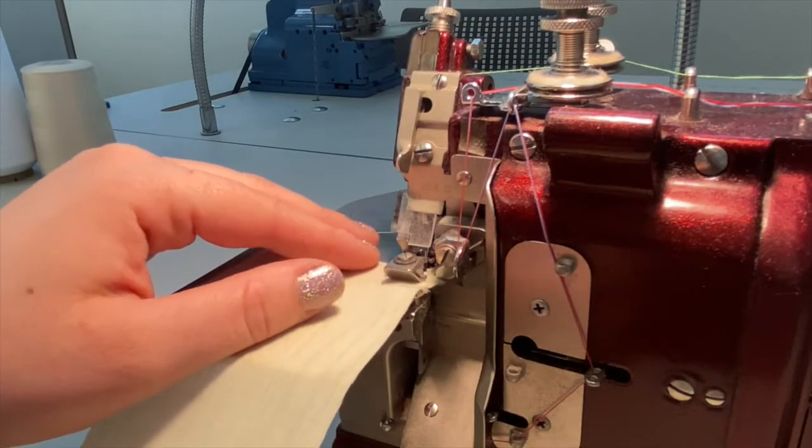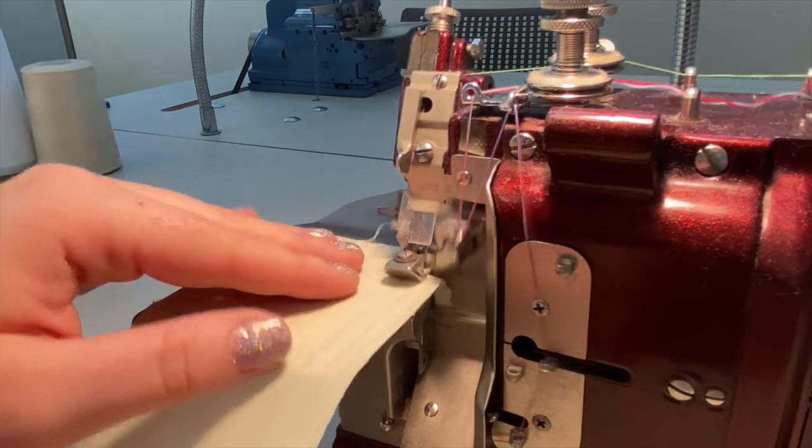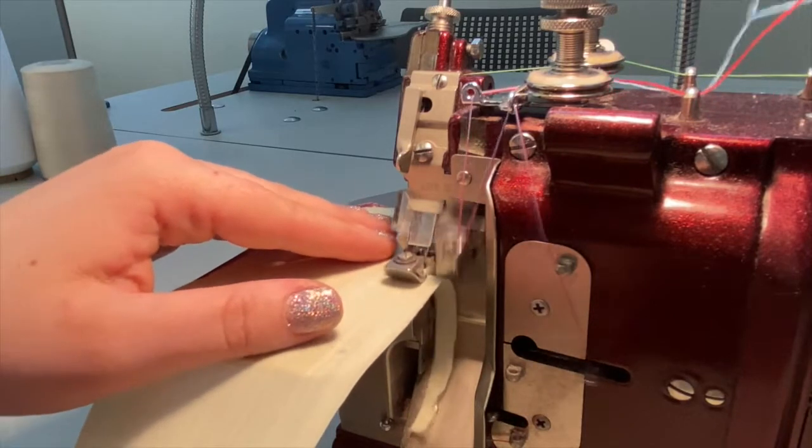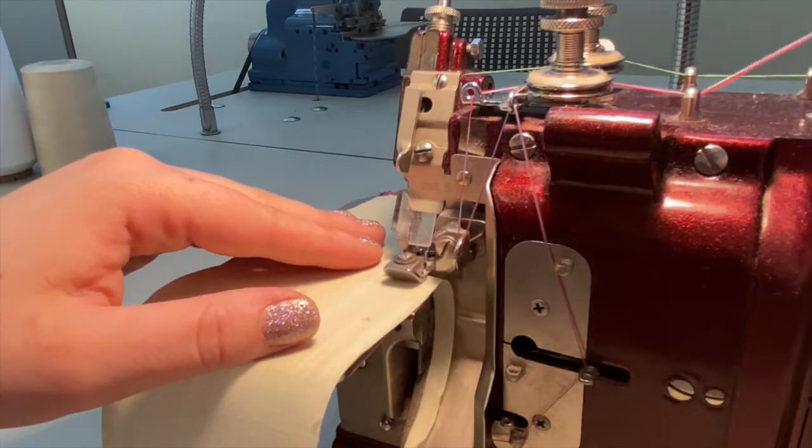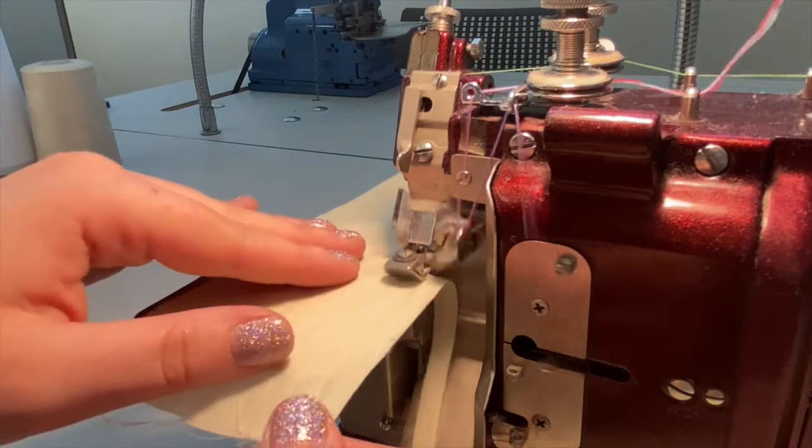The pearl marrow machine creates a very narrow rolled hem, measuring approximately an eighth of an inch wide. The blade will trim away any excess fabric beyond the stitch width, so be sure to factor this into your pattern draft.